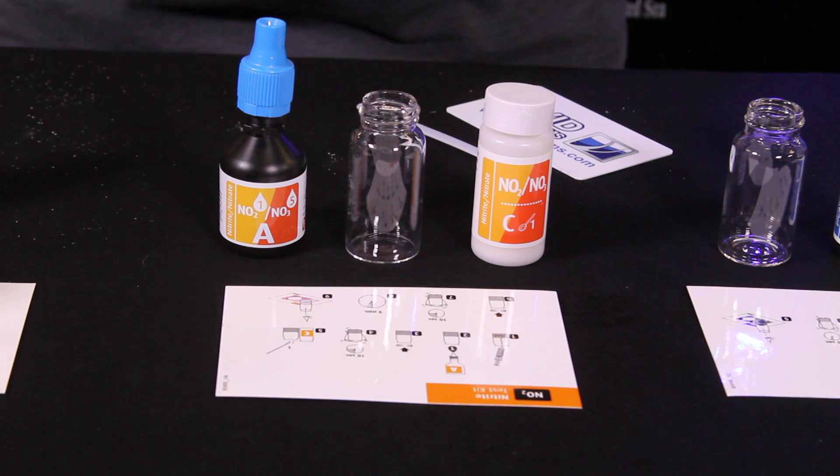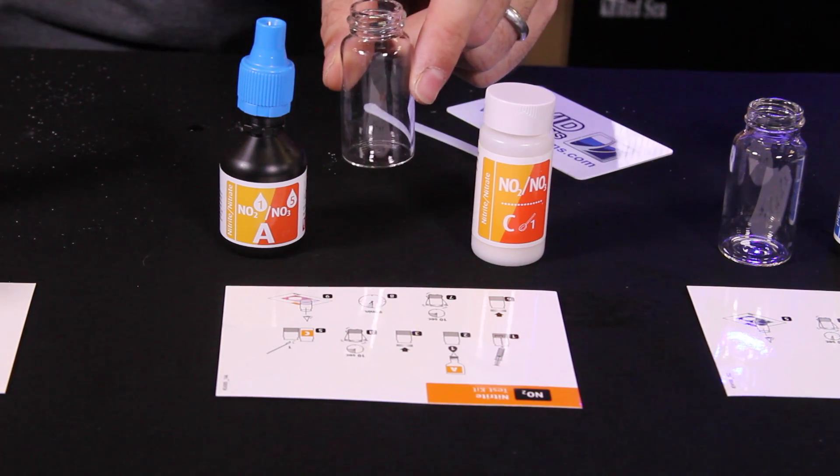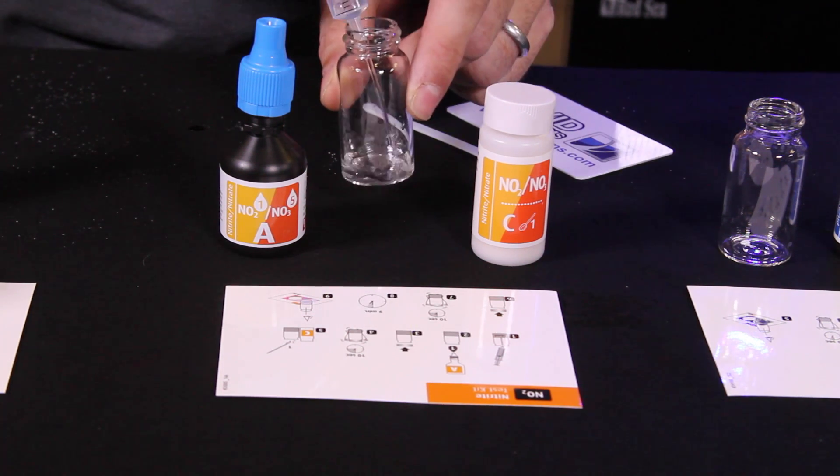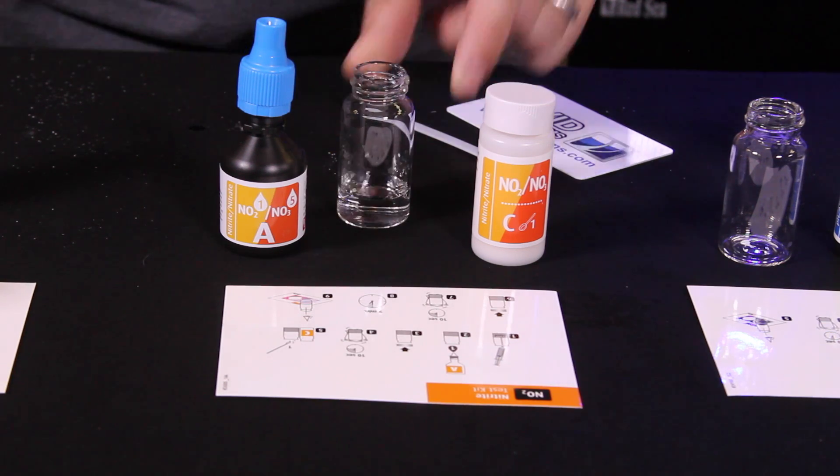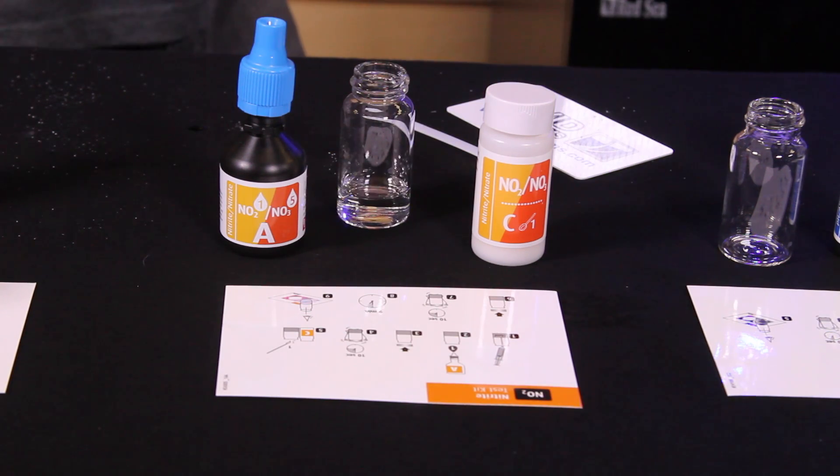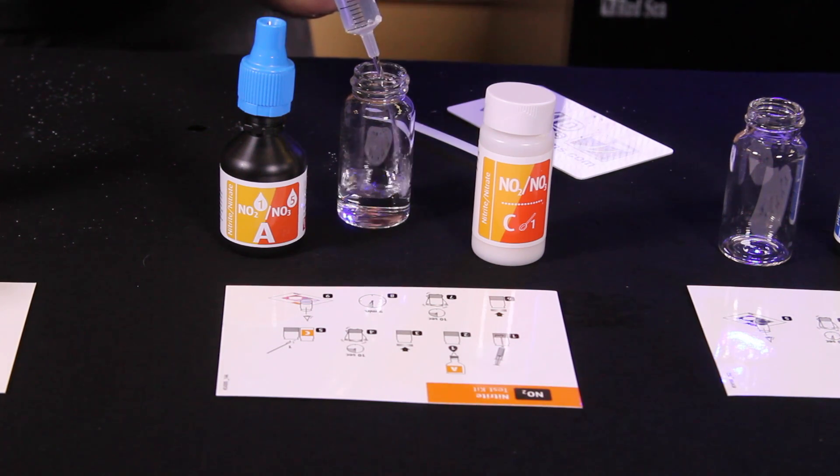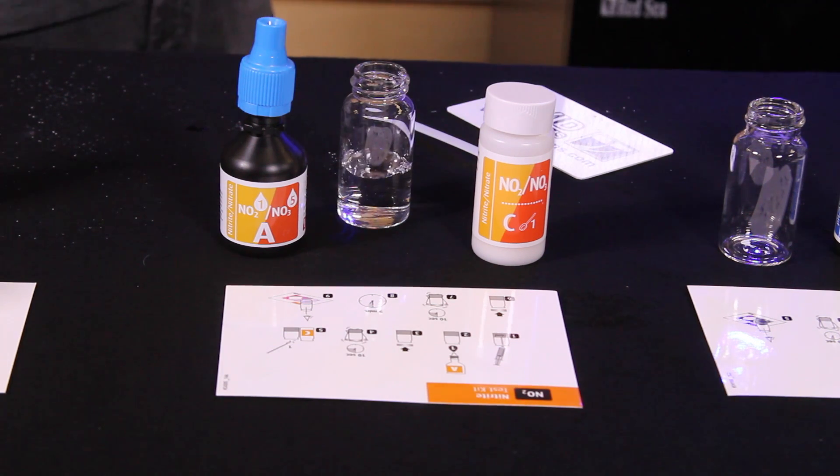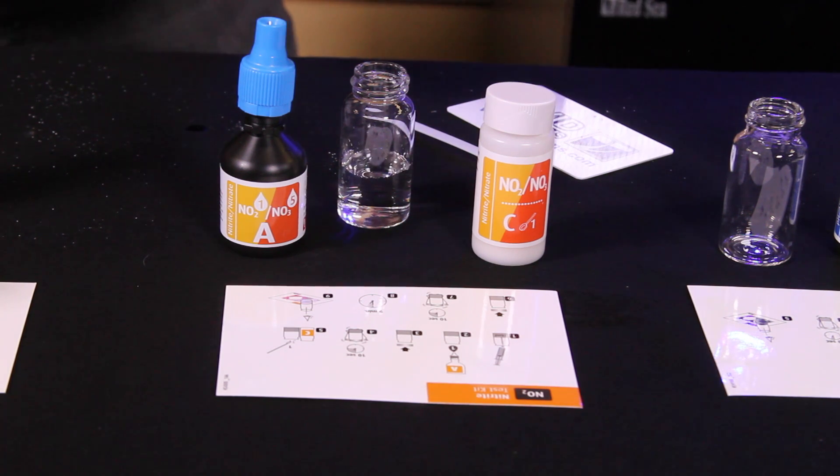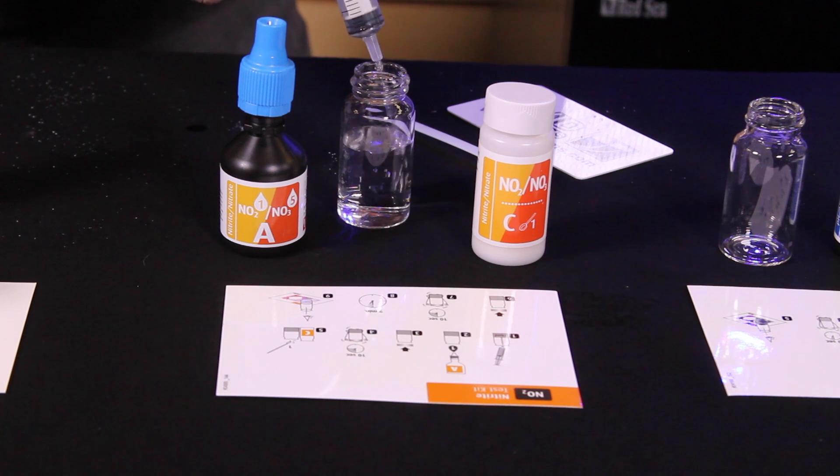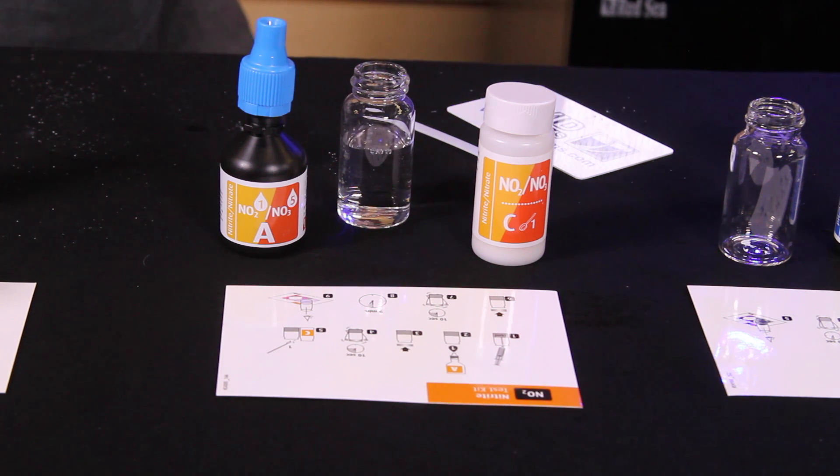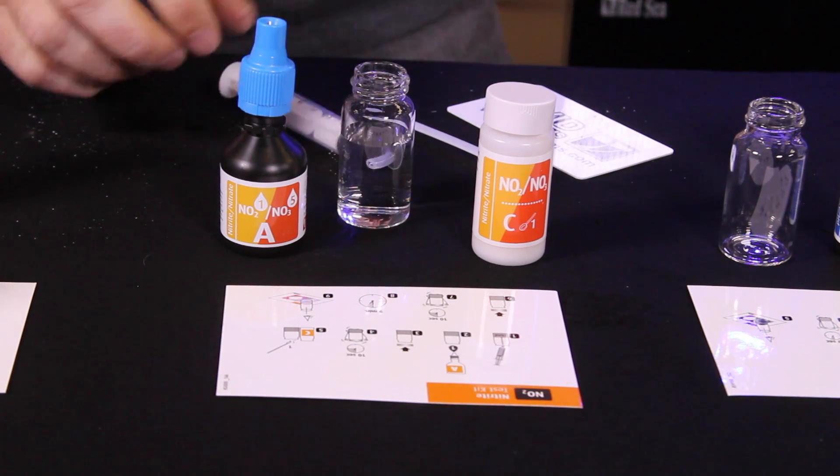All right, now let's go ahead with our nitrite tests. With this test, we need to add a total of 16 mils to the test vial. So there's five. Another five. And there makes 15. And one final milliliter. Make 16 milliliters of sample water.